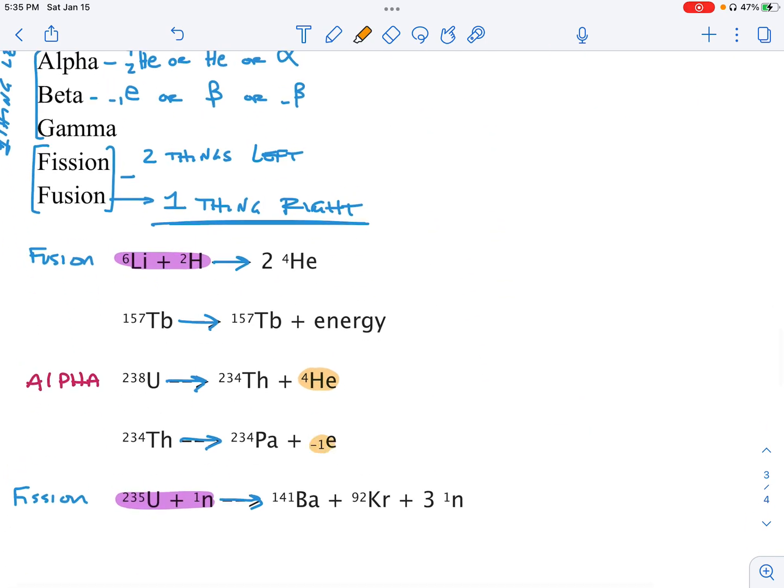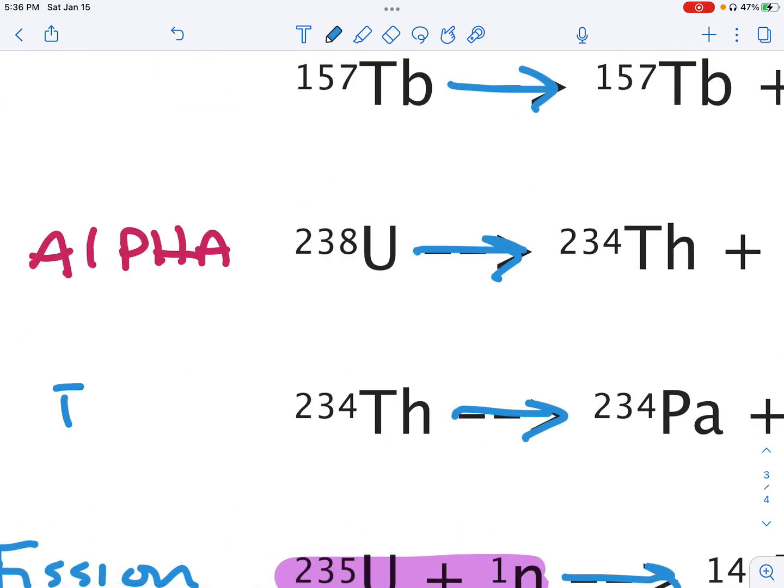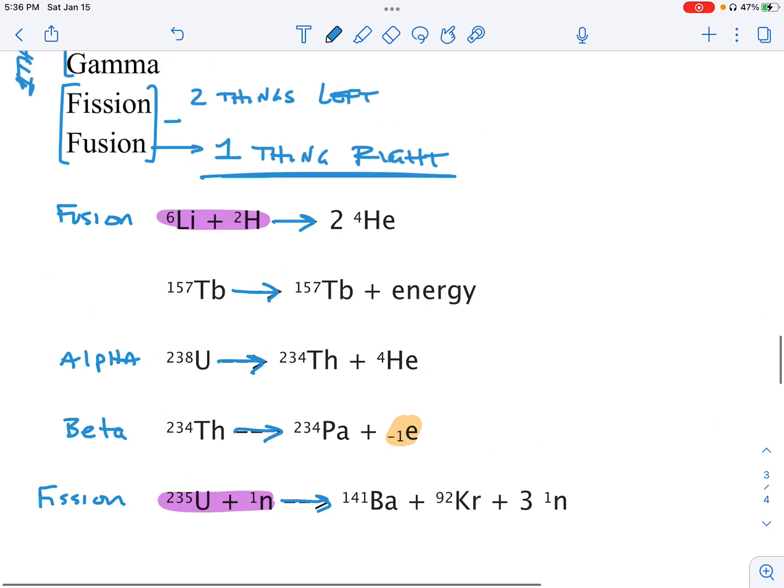I come back down. I see an electron right here. So this is my beta decay. That's going to really annoy me that alpha is in different colors, so I'm going to change it.